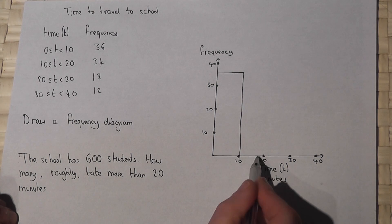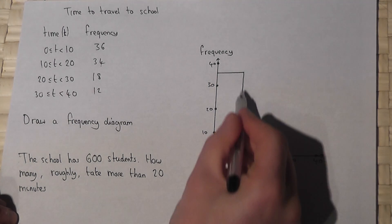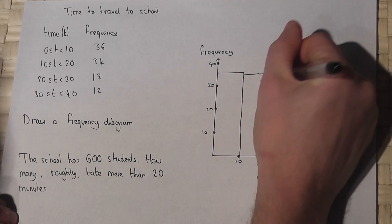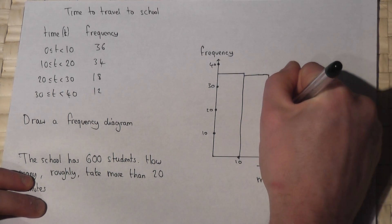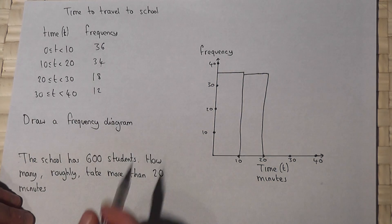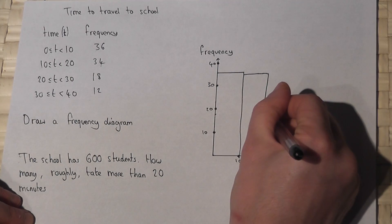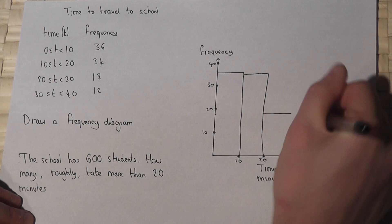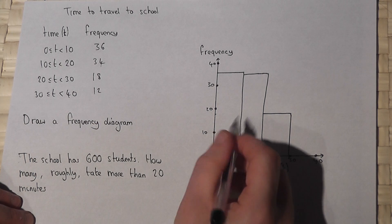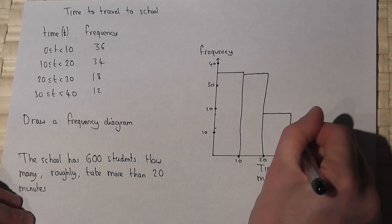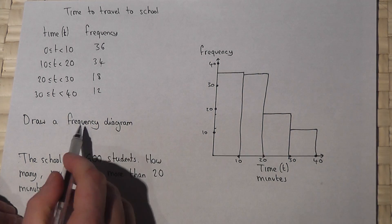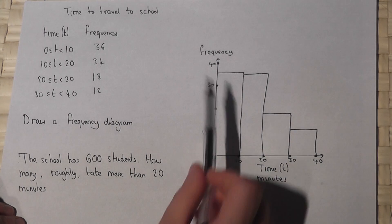Between 10 and 20 I'll go as high as 34 — there we go. It's a bit rough but it gives you the idea of how to draw the graph. There were 18 people between 20 and 30 minutes, so a bar between 20 and 30 about there. Then between 30 and 40 there were 12, about there. That's how we construct a frequency diagram, though normally we'd have graph paper and do it more accurately.